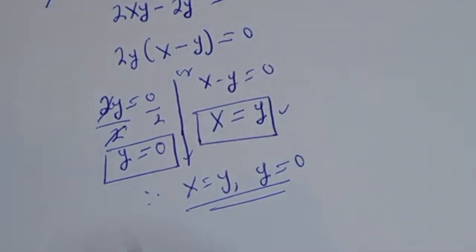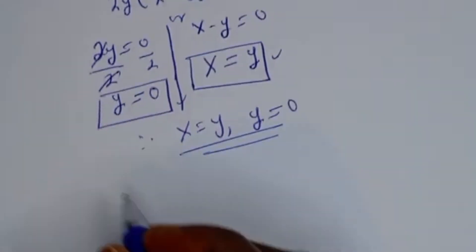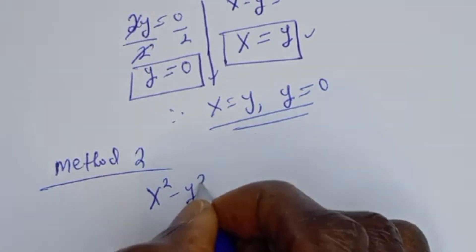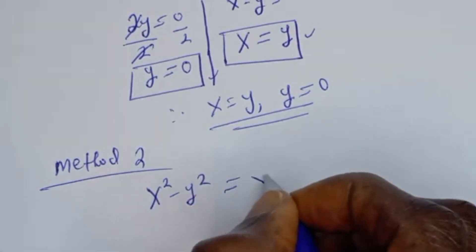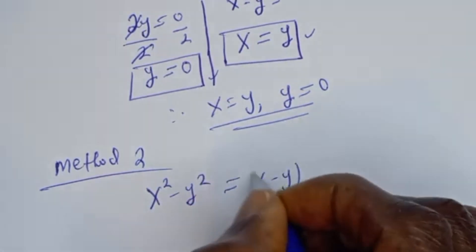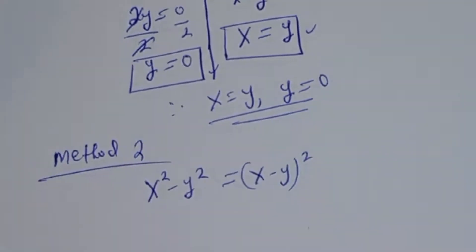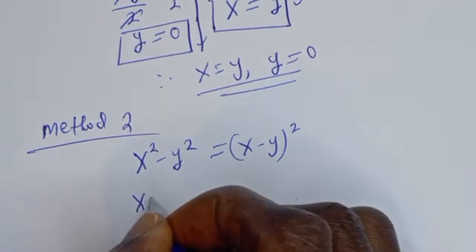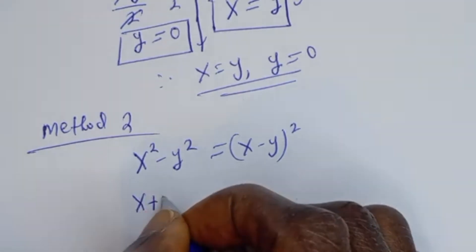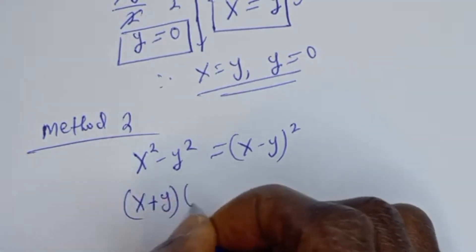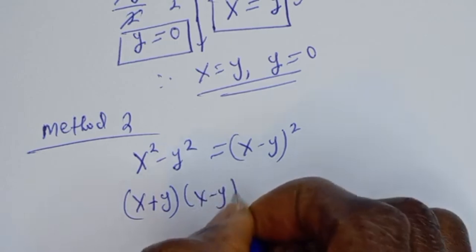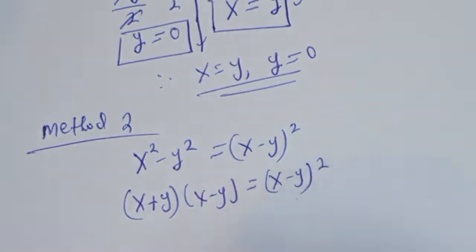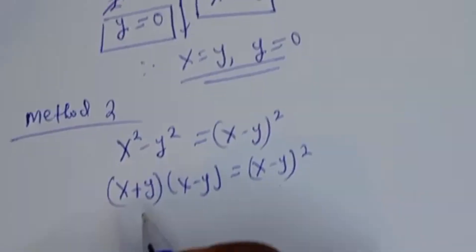We can also solve using another method — let's call the previous one Method 1. Now consider the same equation, X squared minus Y squared is equal to X minus Y all squared. This method is more straightforward. The left side is a difference of two squares.